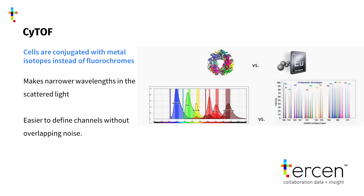CyTOF is an alternative method with improved detection because metal isotopes are used to conjugate the antibodies instead of fluorochromes. Fluorochromes scatter laser light in wavelengths that can overlap with each other and make them hard for the signal processor to differentiate. Metal isotopes give a sharper wavelength so there's less noise in the signal channels. Because they don't overlap so much, more channels can be detected using CyTOF, up to 50 in most cases. Traditional flow cytometry normally detects up to 28 channels, but there have been improvements to the method, called spectral cytometry, which has increased that to 40.